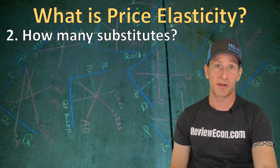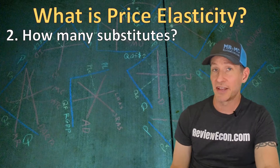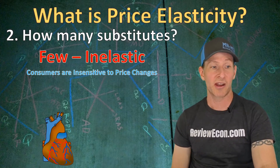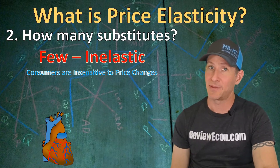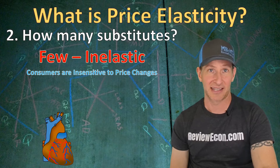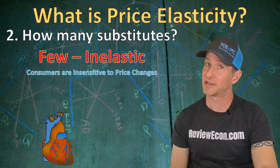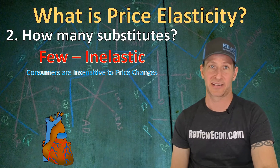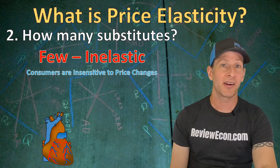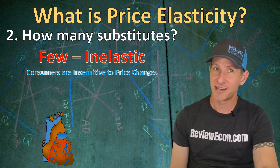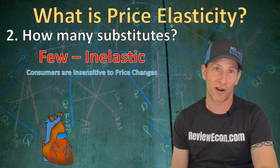The second test for determining price elasticity of demand is how many substitutes a particular product has. If there are very few substitutes, consumers are going to be more insensitive to a price change, meaning the product will have inelastic price elasticity of demand. Heart transplants are both a necessity and have very few substitutes — as a result, they have inelastic demand. If the price of heart transplants increases, consumers will likely buy the same amount, and if the price decreases, consumers aren't going to buy more heart transplants.